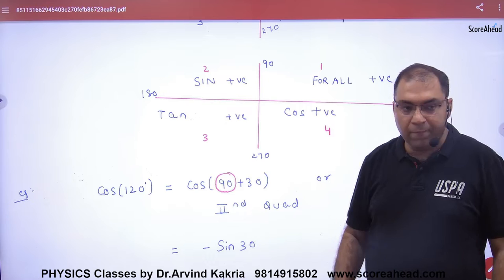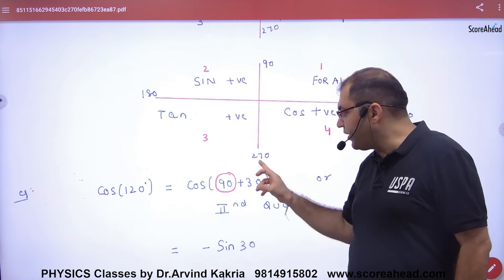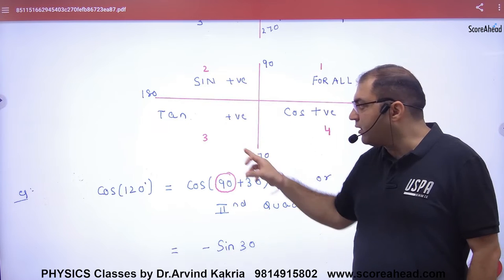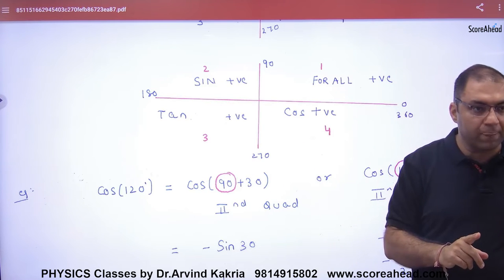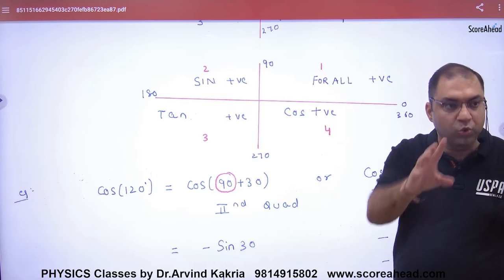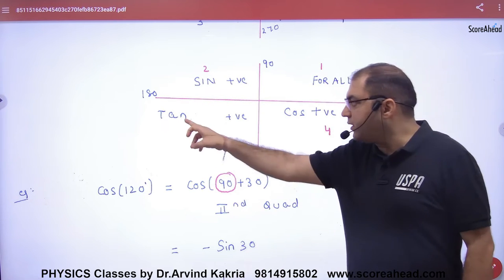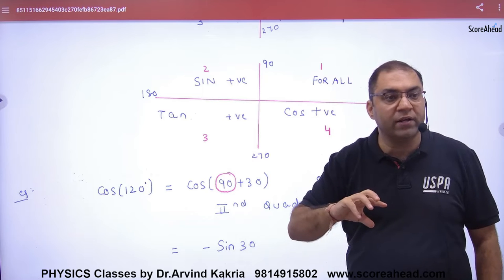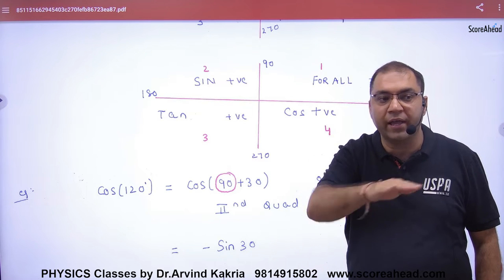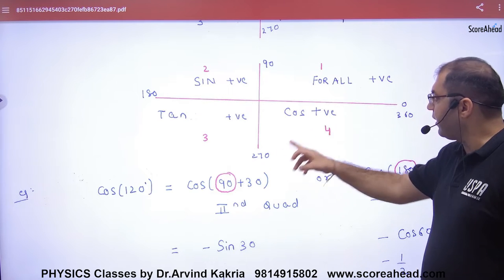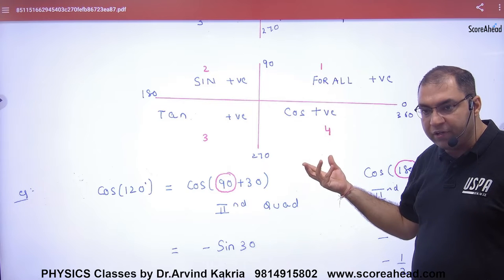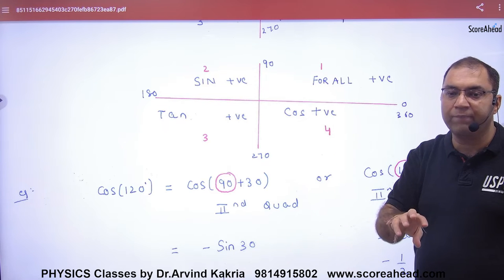If you have an angle between 180 and 270, like 210 degrees, that is the third quadrant. Tan of 210 is positive, but cos and sin will be negative. For angles between 270 and 360, cos will be positive, while sin and tan will be negative.